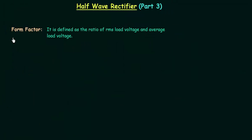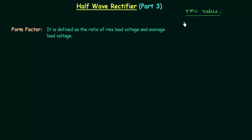In this lecture I will explain the form factor and we will calculate it for the half wave rectifier circuit. But first I will explain the significance of RMS value. In the last lecture we saw how to calculate the RMS load current and RMS load voltage but we skipped the significance part. So first I will explain the significance of RMS value, then we will move to the form factor.